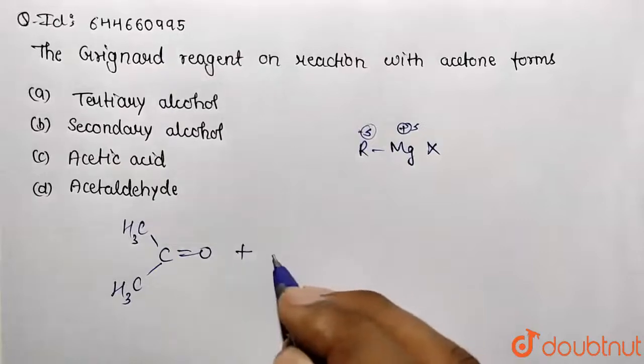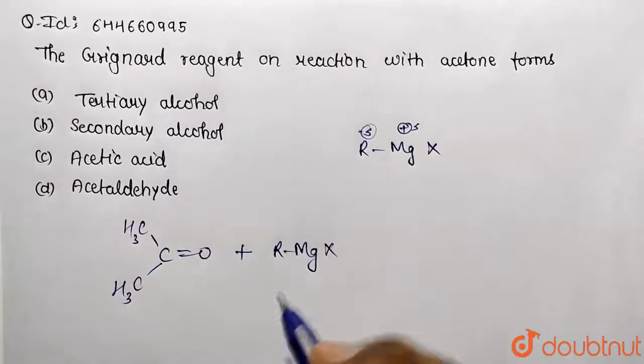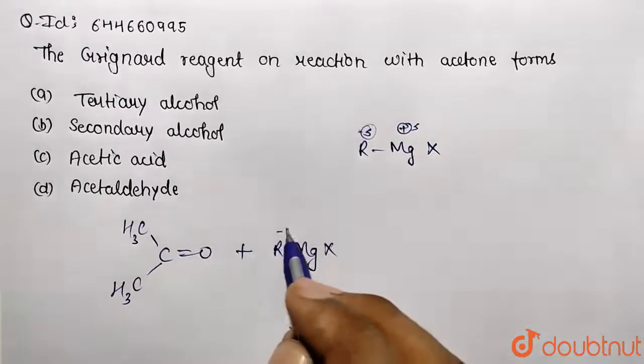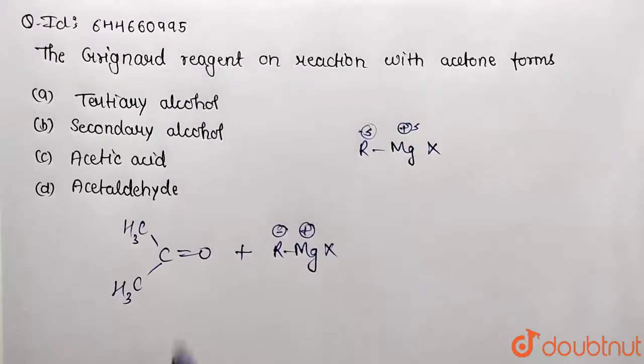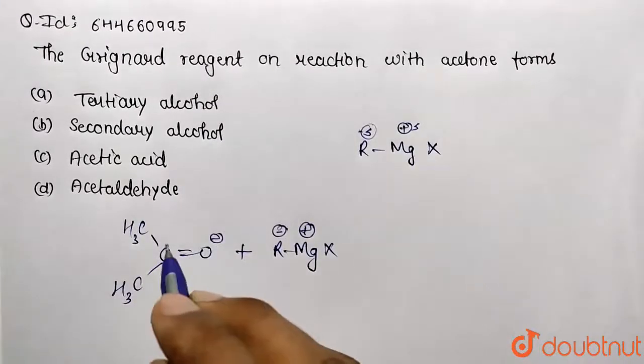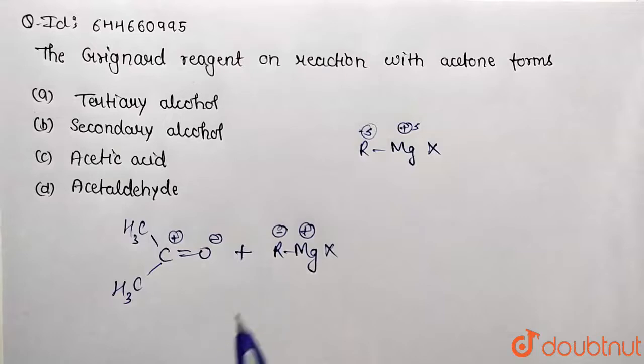So this is reacting with our Grignard. So R-Mg-X I am taking over here. So correspondingly reaction will take place. This is negative, this is positive, so here partial polarization will result in negative and corresponding product.